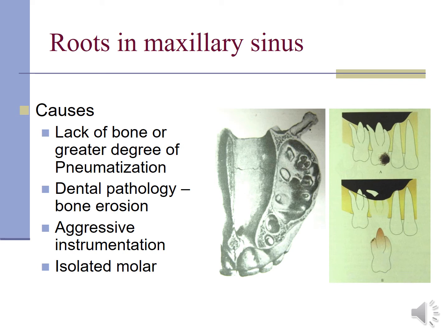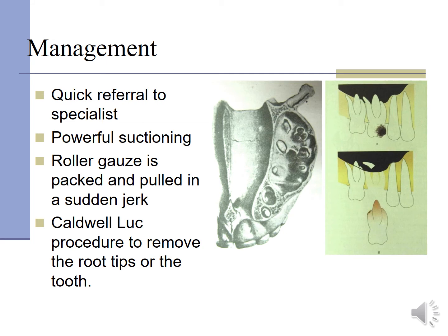Regarding roots in the maxillary sinus, the most common causes for displacement of a root into the maxillary sinus are lack of bone or a greater degree of pneumatization due to the aging process, bony erosion, aggressive instrumentation, or an isolated lone-standing molar. Management includes referral to a specialist if an oral communication has already been created. Powerful suctioning is used, or a ribbon gauze is packed and pulled with a sudden jerk. If all this fails, the Caldwell-Luc procedure is used to remove the root tips.